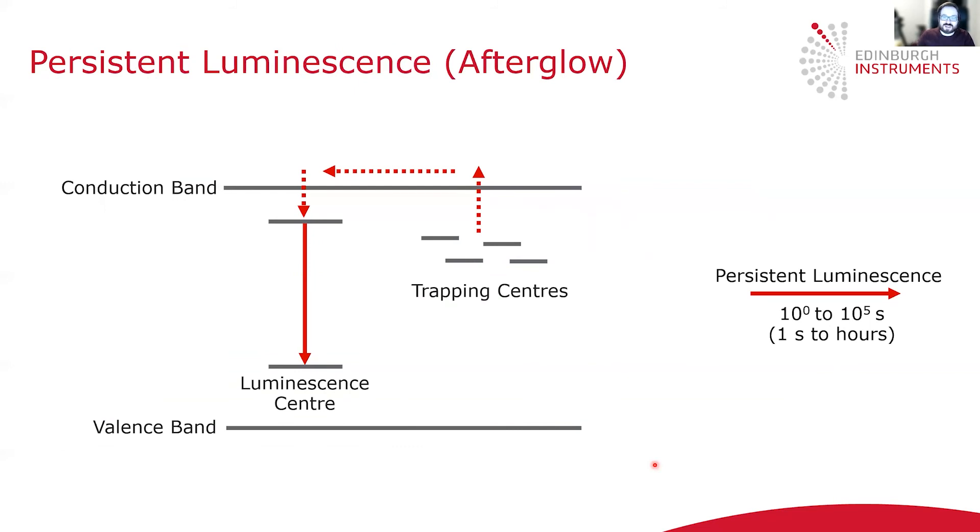The last type of photoluminescence I'm going to discuss is persistent luminescence, which is also commonly called afterglow. This occurs on a much longer timescale than the previous ones, and the process involves some kind of trap.